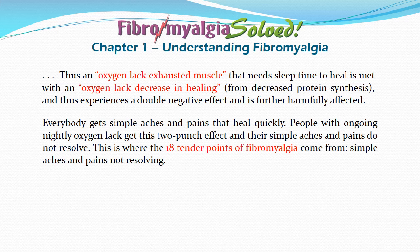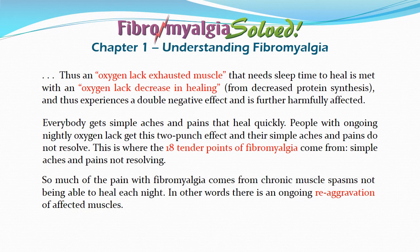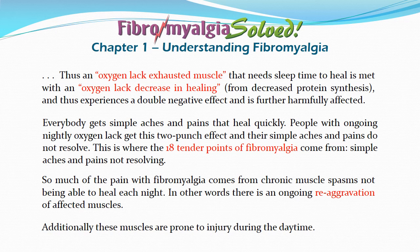Everyone gets simple aches and pains that heal quickly. People with ongoing nightly oxygen lack get this two-punch effect and their simple aches and pains do not resolve. This is where the 18 tender points of fibromyalgia come from — simple aches and pains not resolving. So much of the pain with fibromyalgia comes from chronic muscle spasms not being able to heal each night, creating an ongoing re-aggravation of affected muscles. Additionally, these muscles are prone to injury during the daytime.